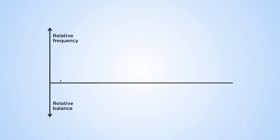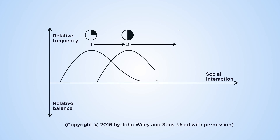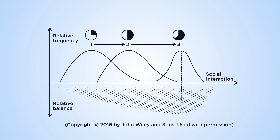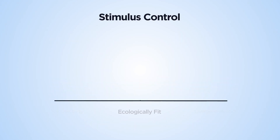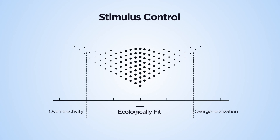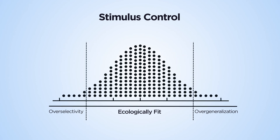An operant class is a population of responses that serve the same function. The environment selects the responses with the greatest ecological fitness, which are more likely to be reproduced. Following a normal distribution, behaviour is more probable along a continuum of discrimination and generalisation. This is due to a phenomenon known as stimulus control.